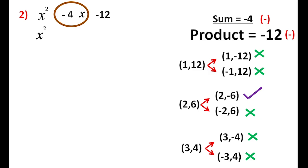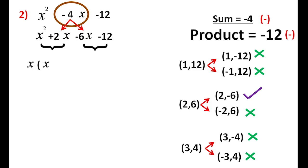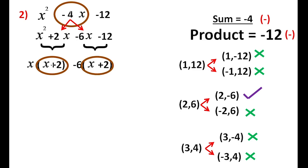So we write x² + 2x - 6x - 12, then group the first two and last two terms. From x² + 2x, x is common: x(x + 2). From -6x - 12, -6 is common: -6(x + 2). Since x + 2 is common in both terms, we take x + 2 outside. Remaining gives x - 6 in another bracket. So we get two factors: (x + 2)(x - 6).